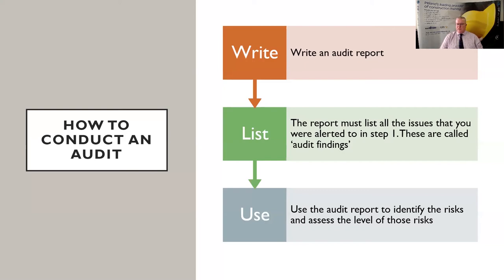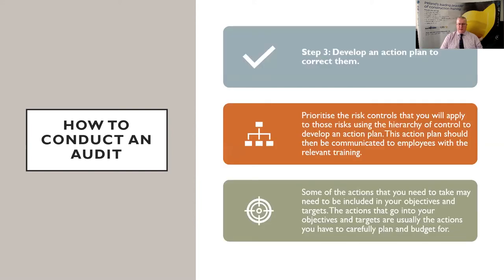The report must list what issues you're alerting people to — these are called your audit findings. The use of the audit report is to identify the risks, assess the levels of risk to those exposed, and determine what actions you're going to take to fix it. Developing the action plan: the corrective action is the critical aspect. If we don't deal with the outcomes of the audit report, they're pointless. Corrective actions need a designated person and a designated timeline. Prioritise the risk controls in the hierarchy of controls.